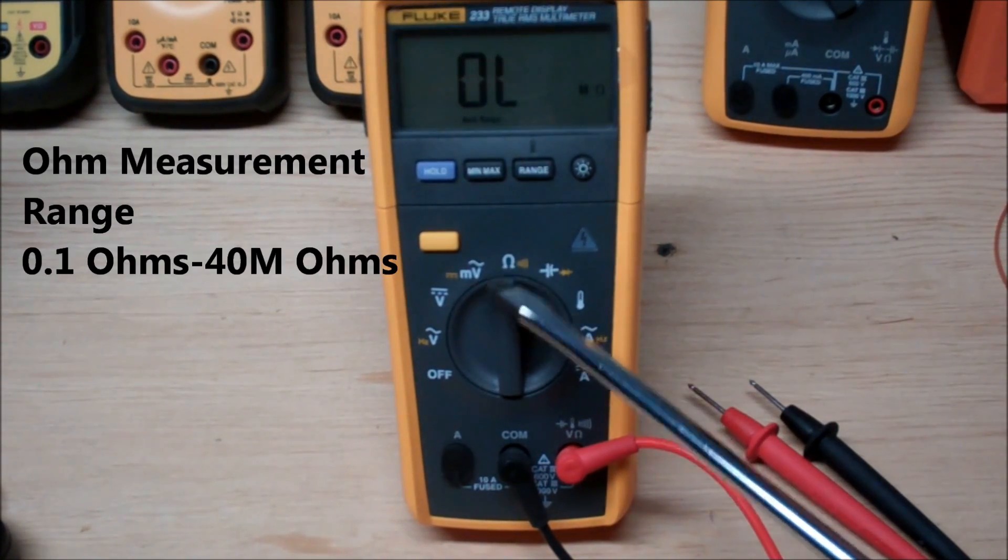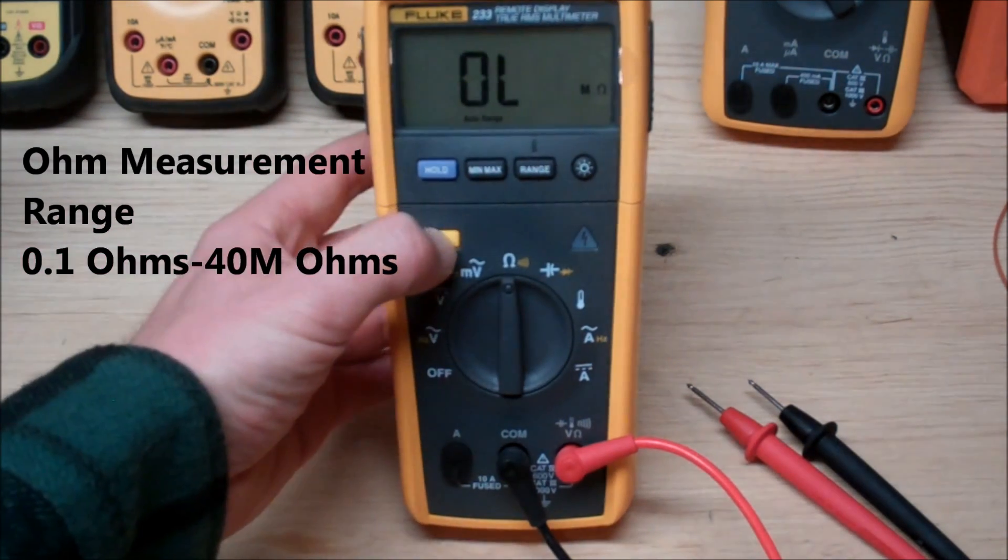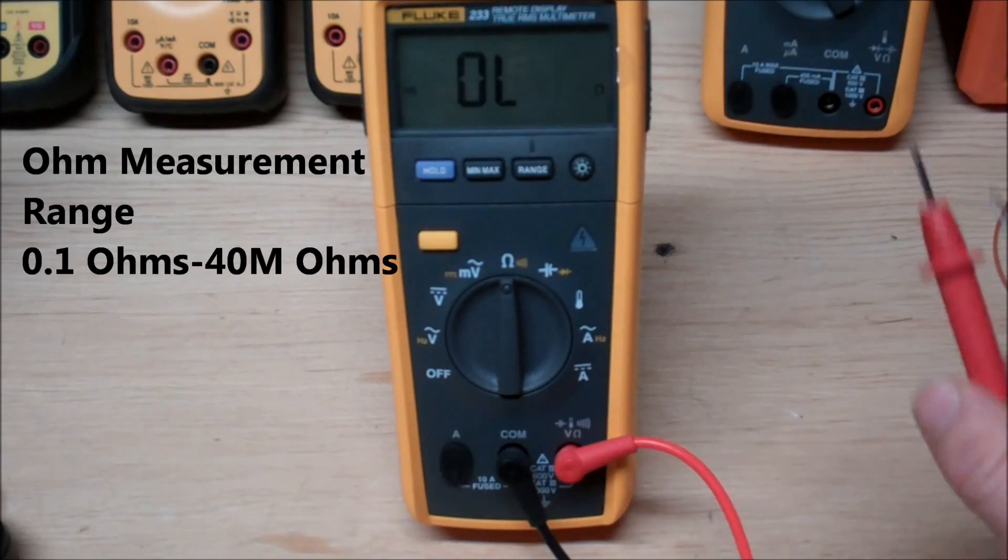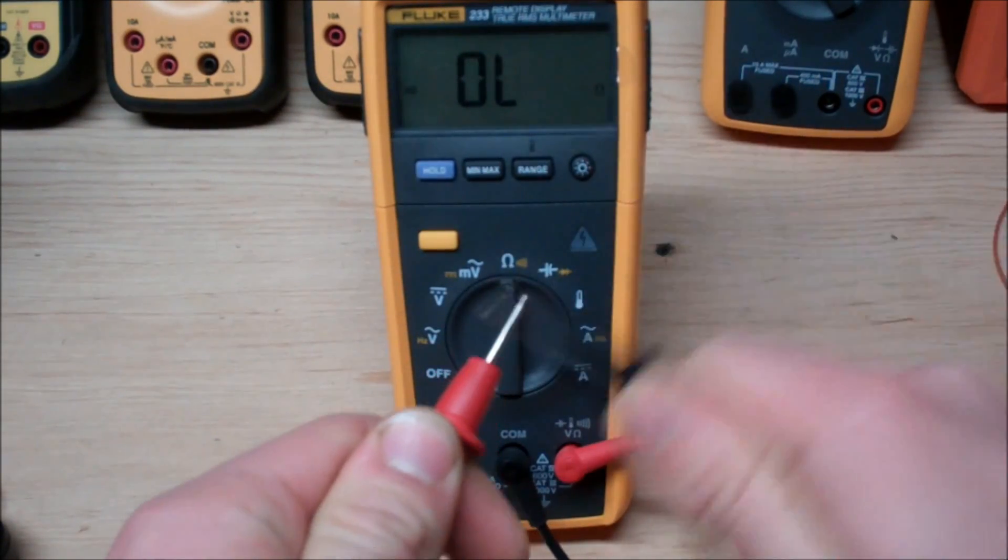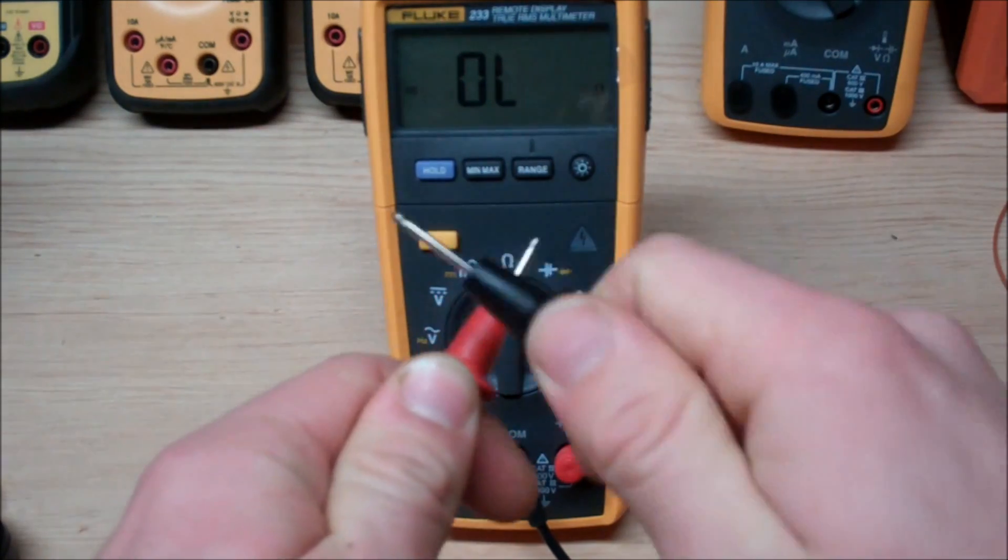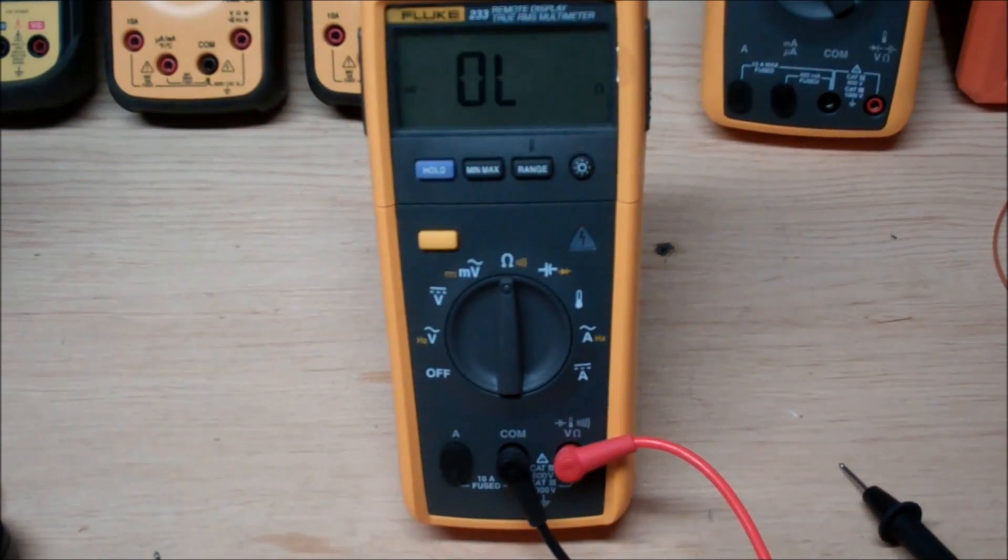Now the next setting we have here is the ohms and continuity. As far as the ohms go it's a very wide range. It goes from 0.1 ohms to 40 megaohms. So it's a really diverse range. Now if we hit the yellow button and toggle to the continuity, let's see how responsive the system is. You see how it registers very quickly? It's a really nice feature that Fluke always integrates, the fact that they have a very responsive continuity.